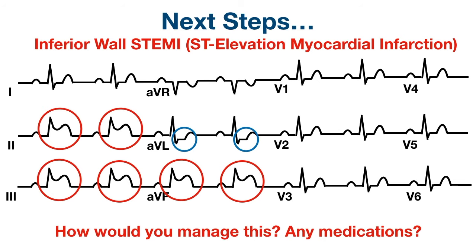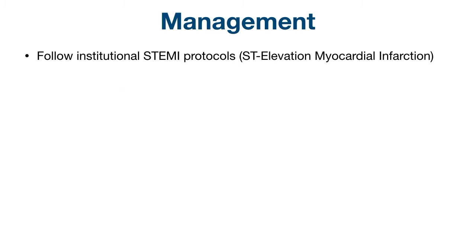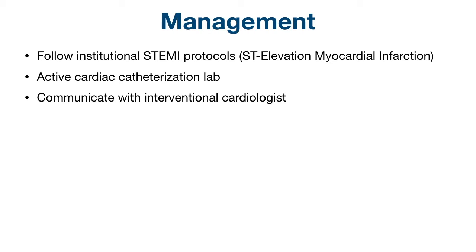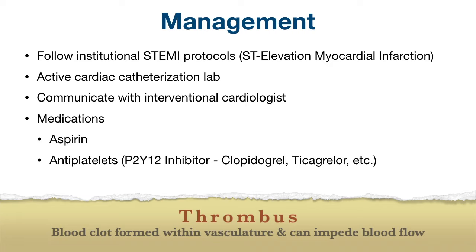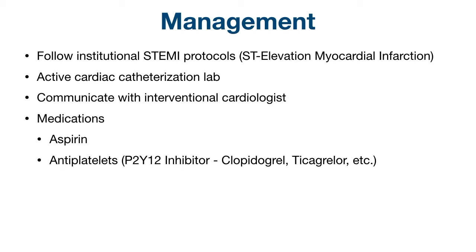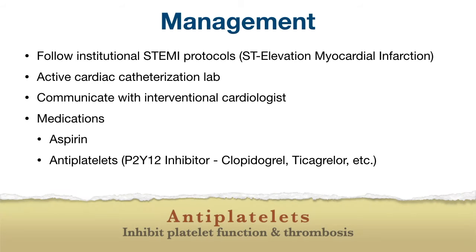How would you manage this and what medications would you administer? You should follow your institutional protocols for a STEMI — protocols can change over time, so make sure you follow current guidelines. You should activate the cardiac catheterization lab for intervention and potential coronary stent placement for his MI. The top priority is to restore blood flow to the heart as quickly as possible. The patient should receive medications including aspirin, and most facilities recommend dual antiplatelet therapy with aspirin and a P2Y12 inhibitor such as clopidogrel or ticagrelor. Remember, many STEMIs are caused by coronary artery plaque rupture, which causes platelet adhesion, activation, and aggregation, as well as activation of the coagulation cascade to form a thrombus that can occlude the coronary artery and reduce blood flow to the heart. By inhibiting platelet function, you're trying to reduce and minimize thrombus formation and worsening of that coronary artery occlusion.